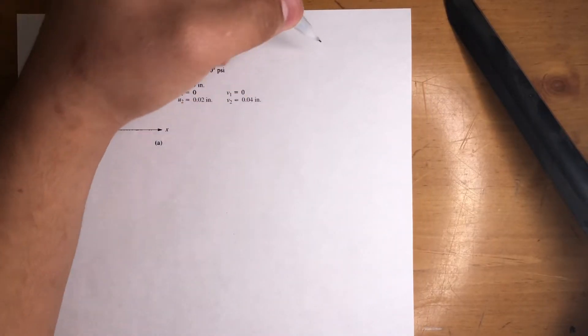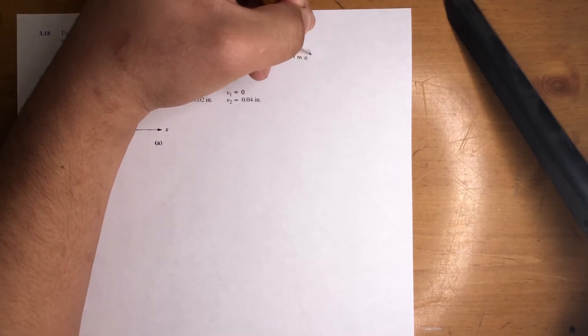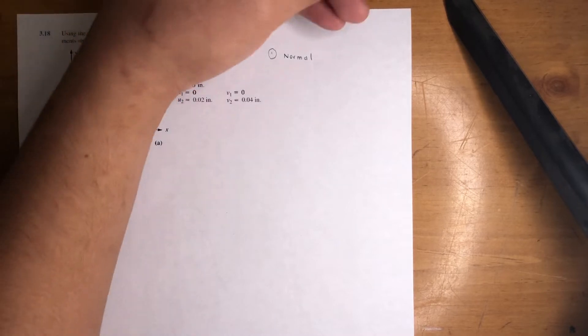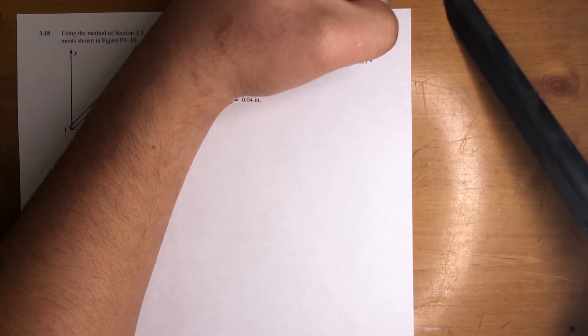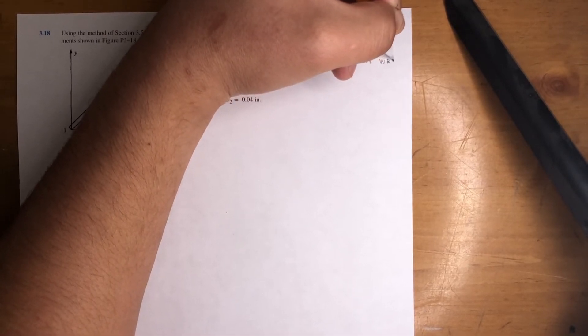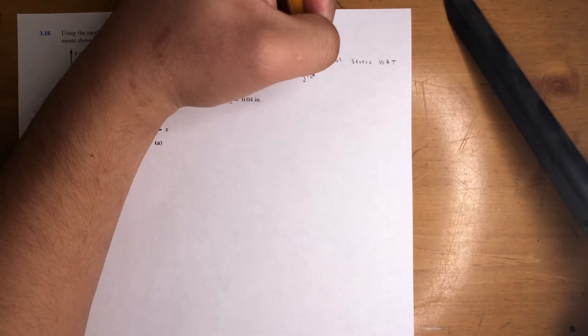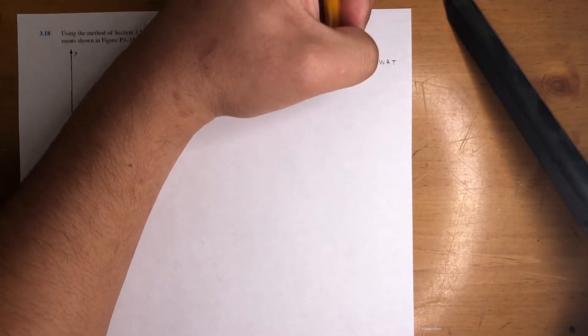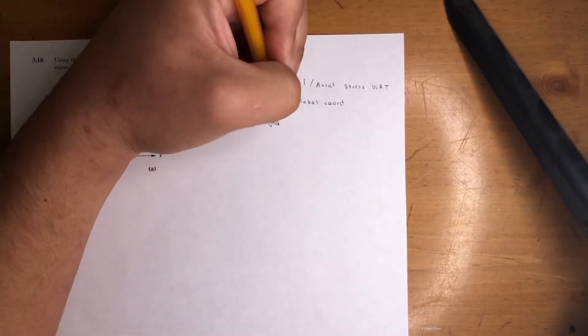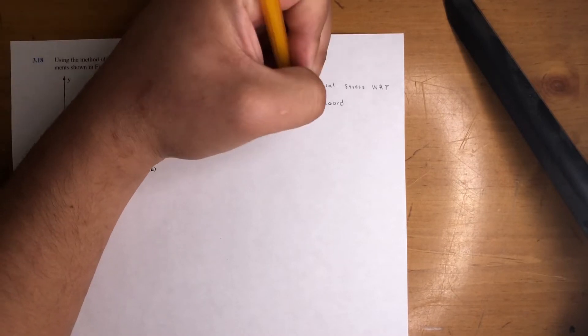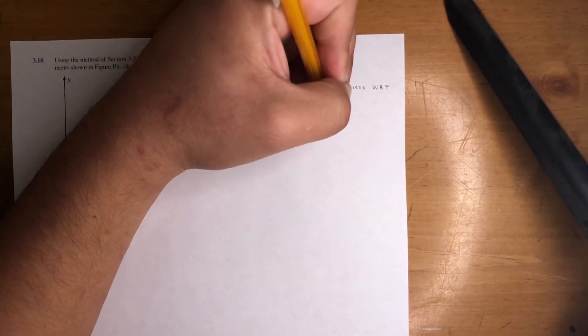Alright, so first step in this problem is figuring out what equation to use. The normal stress—they're asking for the axial stress, which is the normal or axial stress with respect to the global coordinates. This is the formula right here. There's a lot of theory to these formulas, the way they derive them, but it's a C-minus matrix times your displacement vector.